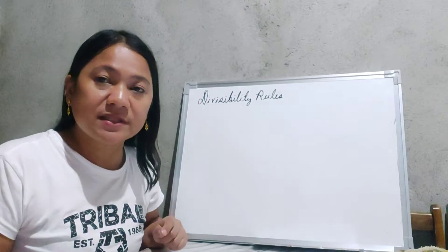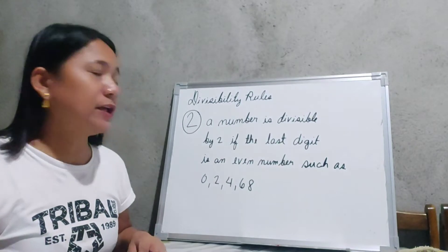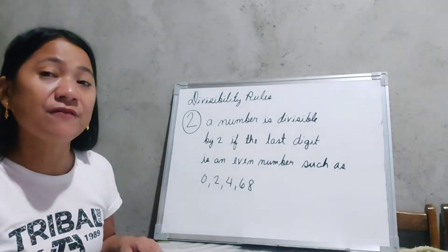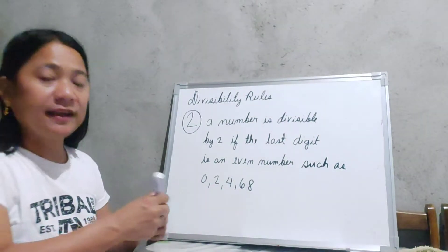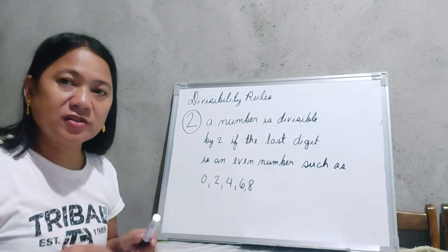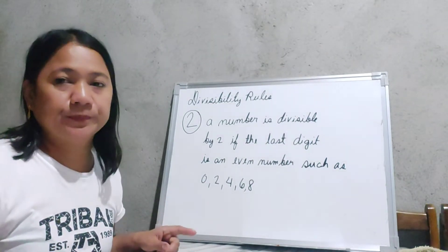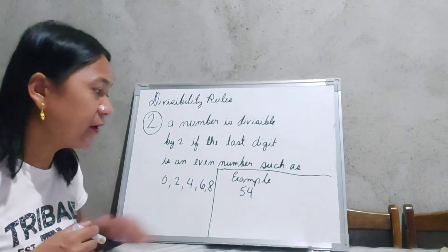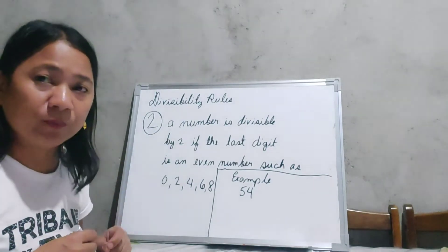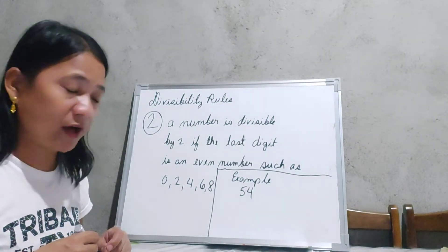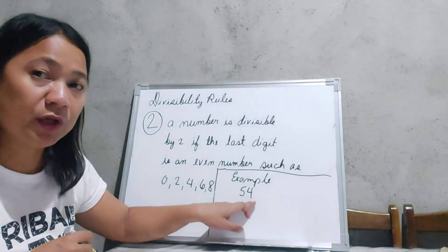The first of these rules is the divisibility rule for 2. A number is divisible by 2 if the last digit is an even number such as 0, 2, 4, 6, and 8. Let us have an example — the number 54. Is 54 divisible by 2? If your answer is yes, you are correct, because 54 ends with an even number, 4.